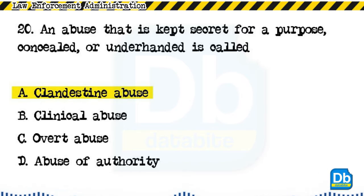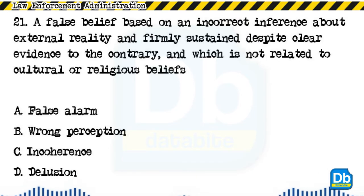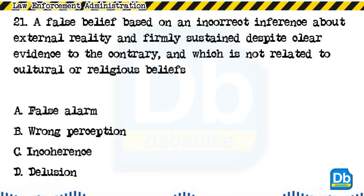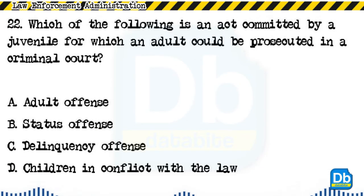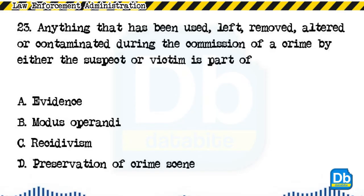The answer is A, clandestine abuse. Question 21: A false belief based on an incorrect inference about external reality, firmly sustained despite clear evidence to the contrary, and not related to cultural or religious beliefs: a) false alarm, b) wrong perception, c) incoherence, d) delusion. The answer is D, delusion. Question 22: Which of the following is an act committed by a juvenile for which an adult could be prosecuted in a criminal court? a) adult offense, b) status offense, c) delinquency offense, d) children in conflict with the law. The answer is C, delinquency offense.